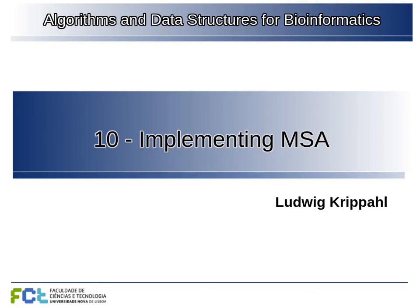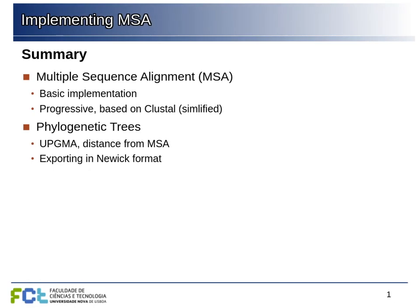This lecture will be a mixture of a tutorial and an exercise to look into more detail on the algorithms for creating the multiple sequence alignment and then using that alignment to create a phylogenetic tree. We're going to start with the multiple sequence alignment — a progressive alignment based on ClustalW but simplified, without the heuristics for fine-tuning and optimization. Then we'll use UPGMA from the distances between sequences in the multiple sequence alignment to create a phylogenetic tree and export it into Newick format.